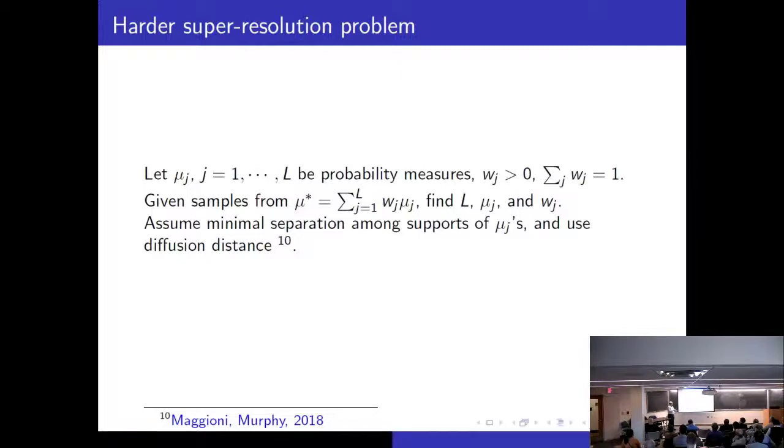Then again there is a harder super-resolution problem which was posed by Mauro Maggioni also in Maryland and postdoc called Murphy. So the problem is like this. Please remember that in the super-resolution problem we had a linear combination of the Dirac deltas. We want to use something more general than the Dirac deltas. So we have some probability distributions μ_j and we take a convex combination. But we don't know how many are there and we don't know what they are and what these combinations are. And then can we separate this? In this work by Maggioni and Murphy, they assumed a certain minimal separation among the supports of μ_j. And then they used the idea of diffusion distance to somehow separate out these μ_j and w_j.